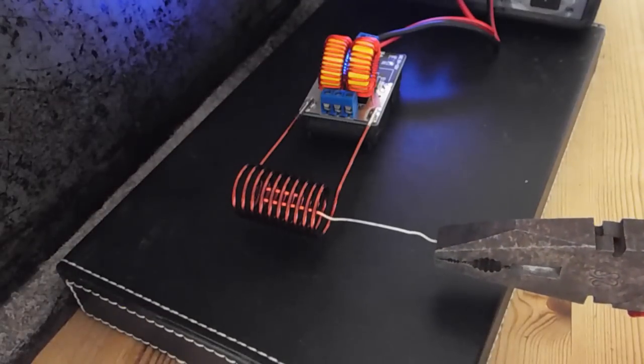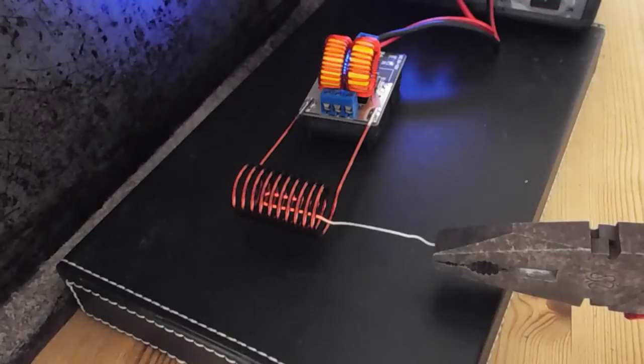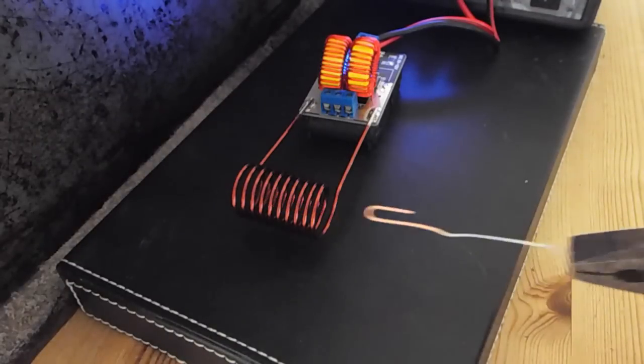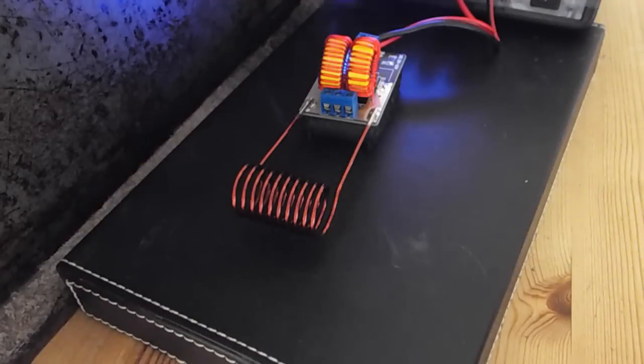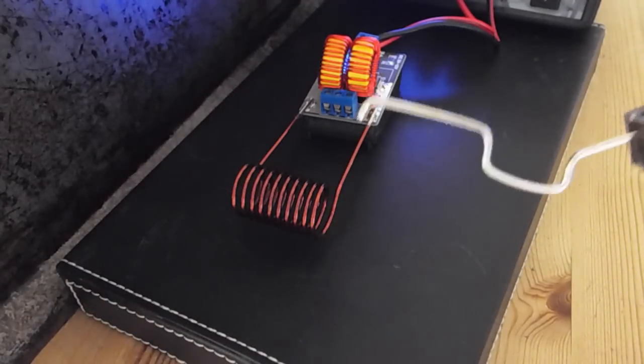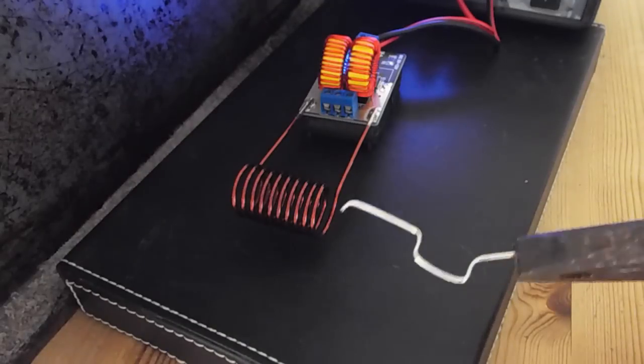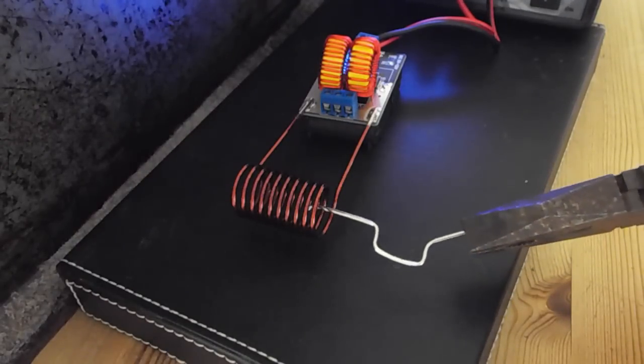I thought at this stage, maybe I'll move on to something slightly thicker because it seemed to do the paper clip really well. So I found another piece of metal, certainly thicker than the paper clip, straightened that out and gave it a go, just wondered how it was going to get on.